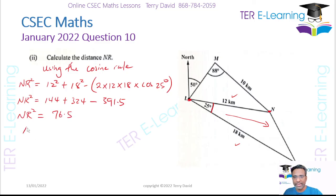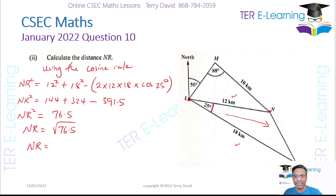Therefore NR is the square root of 76.5. Taking the square root gives approximately 8.7. So NR is equal to 8.7 kilometers. That's the answer for that part.